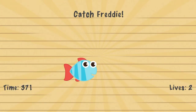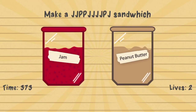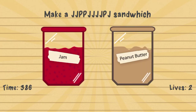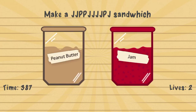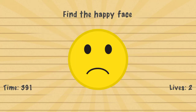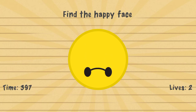Catch Freddy — tap the word 'Freddy'. Make a J-J-P-P-J-J-J-J-P-J sandwich — you tap the jam for J and peanut butter for P. Find the happy face — you turn your device upside down, then you move the eyes and then you move the mouth.